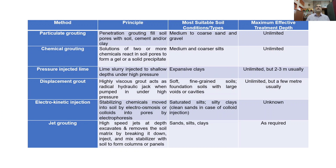Pressure injected lime involves lime slurry injected to shallow depths under high pressure. It is suitable for expansive soils and can be treated to unlimited depth, but usually it is done for two to three meters depth.